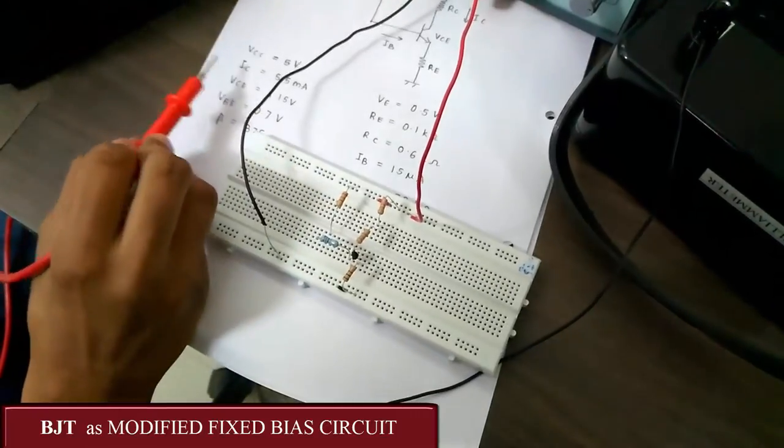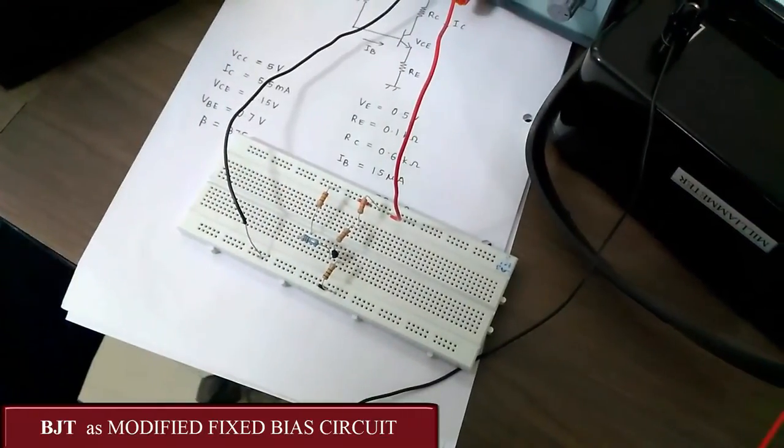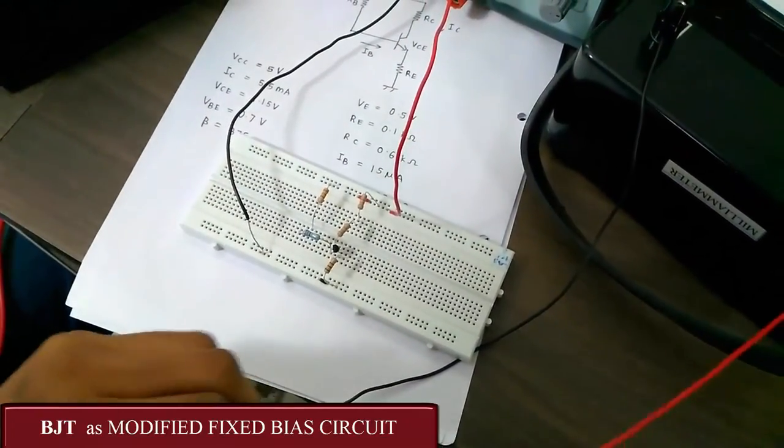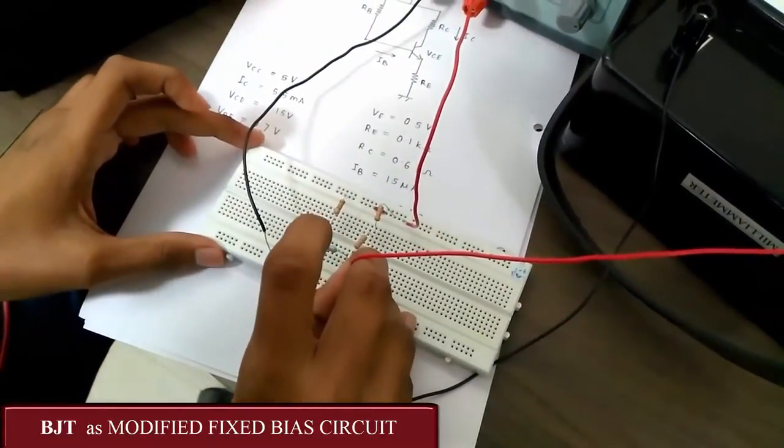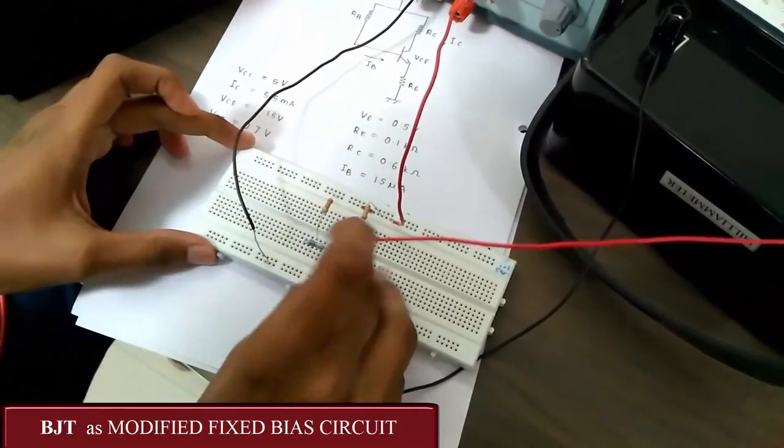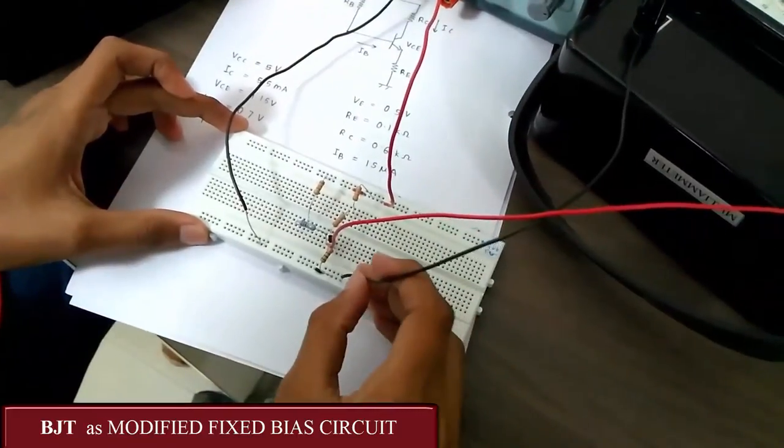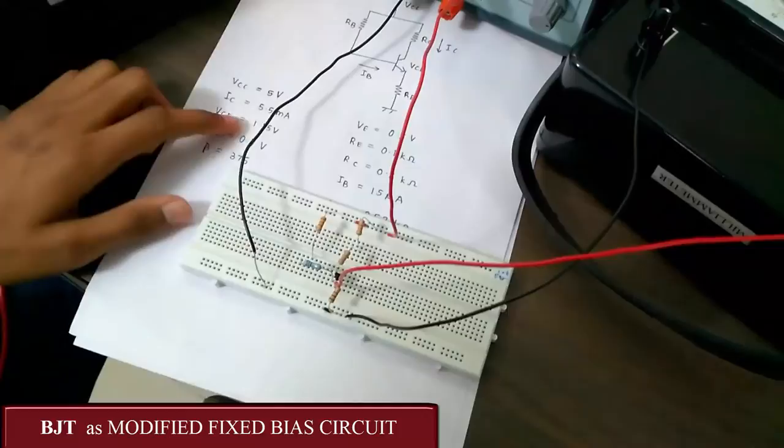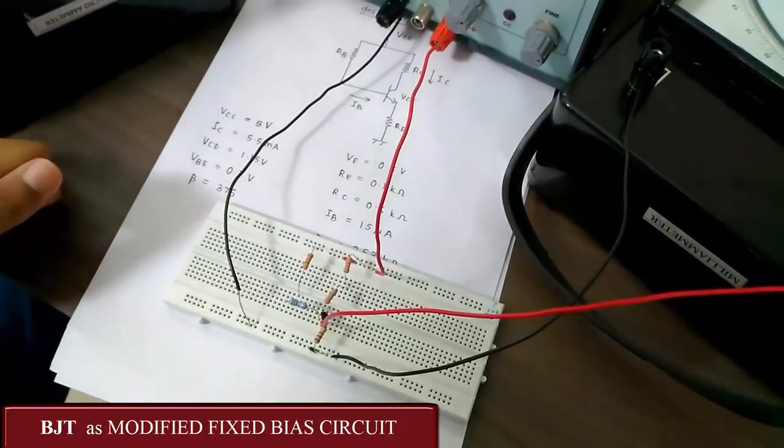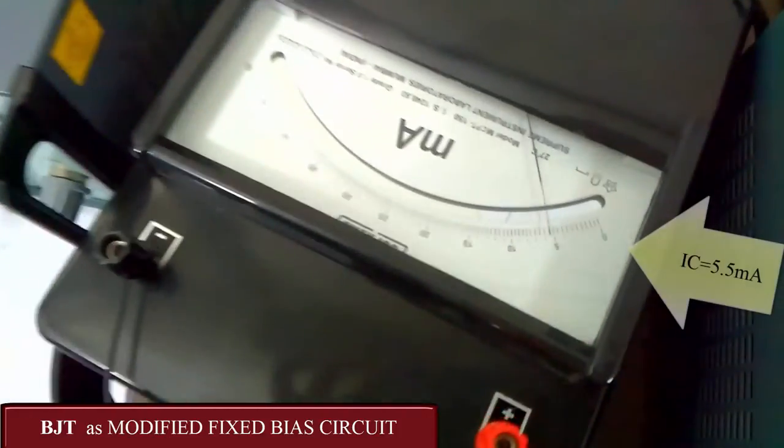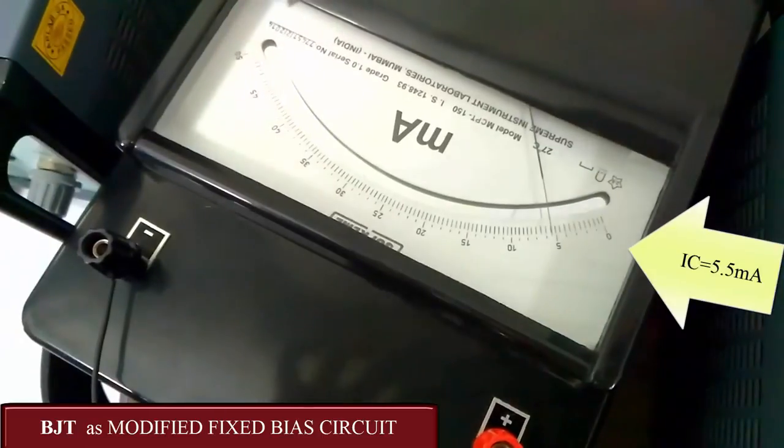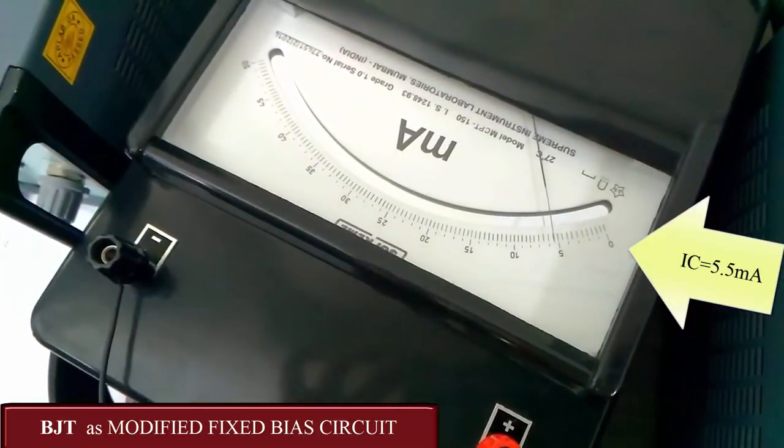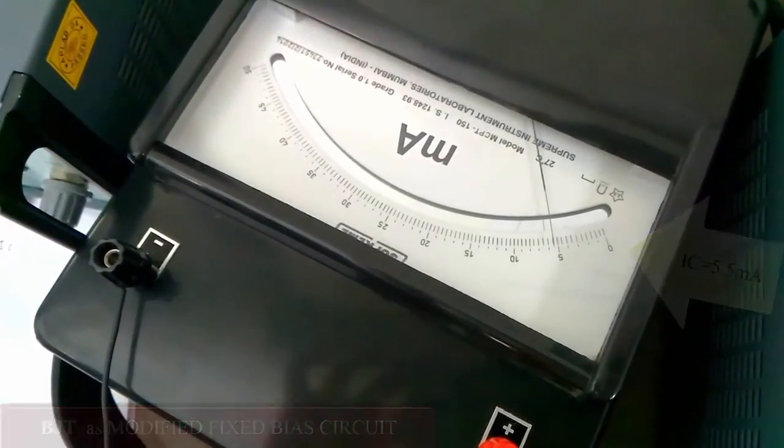Now, let us check the value of IC. For IC, we use a milliammeter. We connect the positive of milliammeter to the collector, the negative to ground. The value that we should get is 5.5 milliamps according to the designing. And we get is also very close to 5.5 milliamps. So, the designing is correct in terms of IC as well.